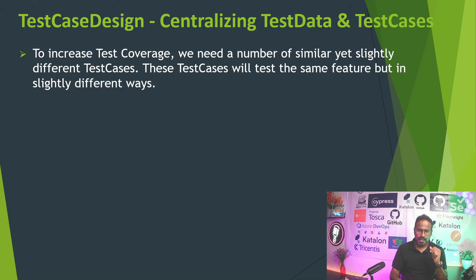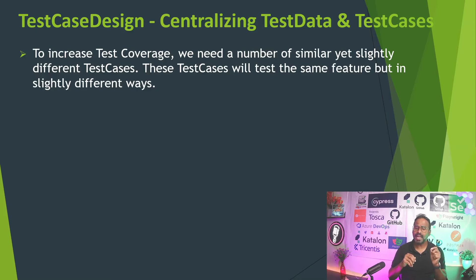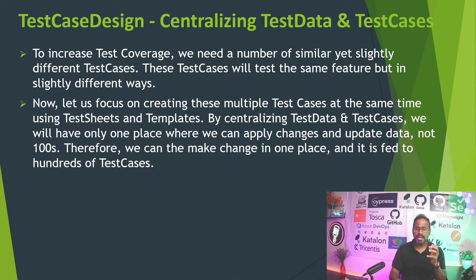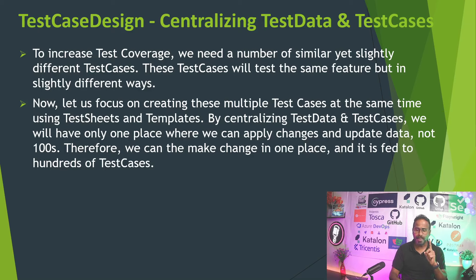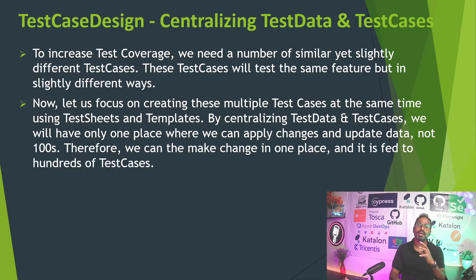To increase test coverage, we need a number of similar yet slightly different test cases. These test cases will test the same feature but in slightly different ways. By centralizing test data and test cases, we will have only one place where we can apply changes and update data, so you don't need to update data in hundreds of test cases. You can make the change in one place and it feeds to hundreds of test cases.